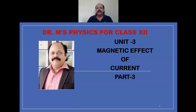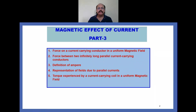Dear students, today's topic of my lecture is Magnetic Effect of Current, Part 3. In it, what you have to learn? First, we understand the concept of force on a current carrying conductor in a uniform magnetic field. Then force between two parallel long current carrying conductors of infinite length. Then definition of ampere. Then representation of magnetic fields due to parallel currents. At last, torque experienced by a current carrying coil or loop in a uniform magnetic field.